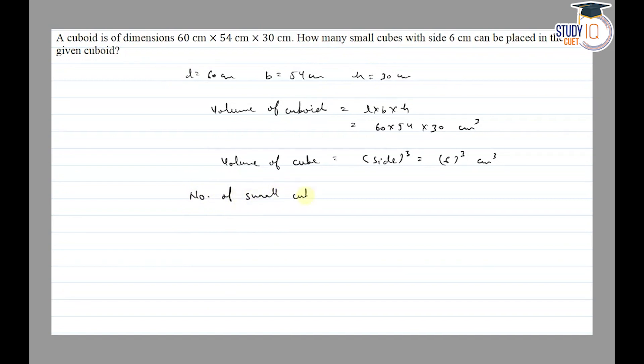Number of small cubes is equal to volume of cuboid upon volume of cube, which is equal to 60 into 54 into 30 upon 6 into 6 into 6.